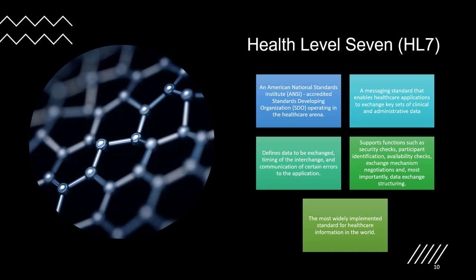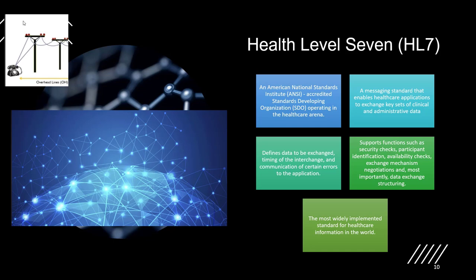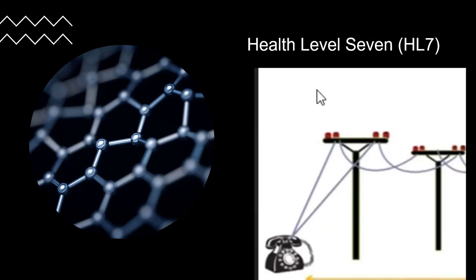HL7, Hospital Language 7, is the most widely implemented standard for healthcare information in the world and has been around since 1987. There are billions of texts out there in use in healthcare that are already stored in HL7 format. Today, we use a different type of transmission for data than we originally used in 1987 for healthcare level 7 — it's comparable to evolving from the telegraph to the telephone to the cell phone era.